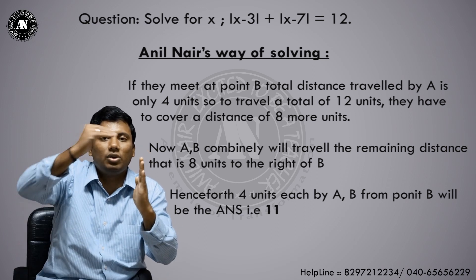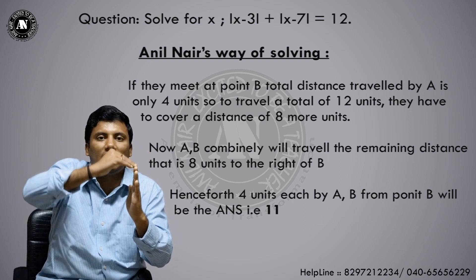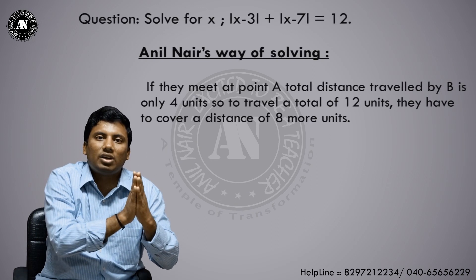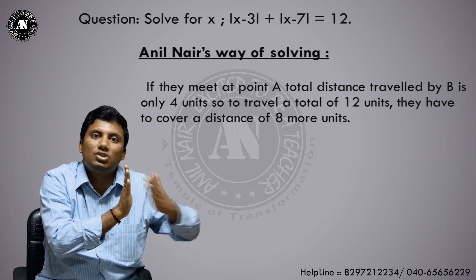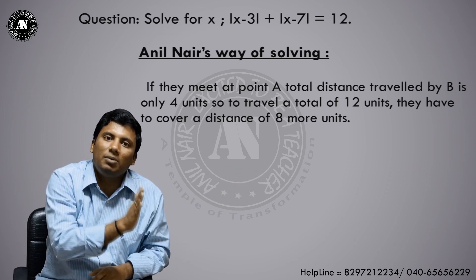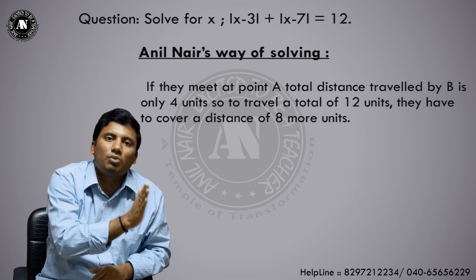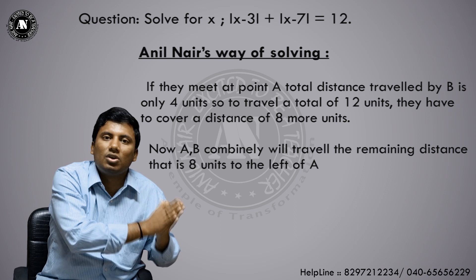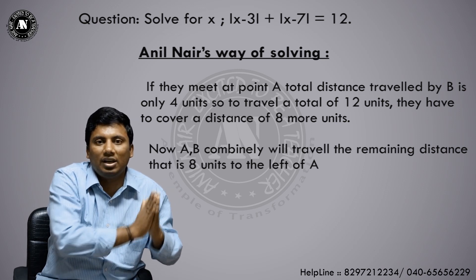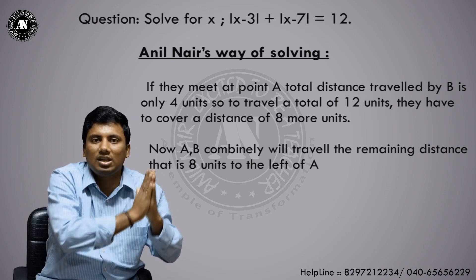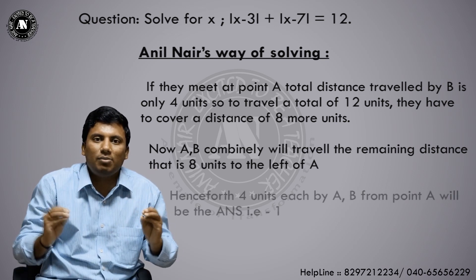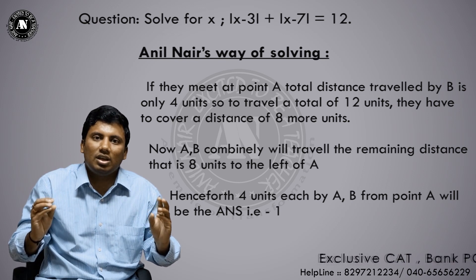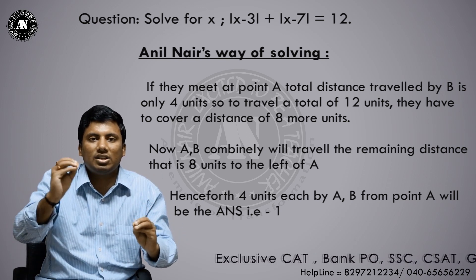Second case: B comes to A. 7 reaches 3 — already 4 units travelled. From point 3, I need to travel 8 more units to the left, shared by 2 people. So the answer is 3 - 8/2 = 3 - 4 = -1. Therefore the answers are x = -1 or x = 11. This is the distance approach.